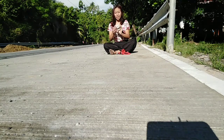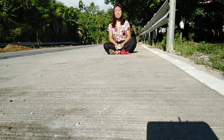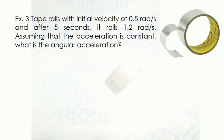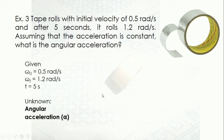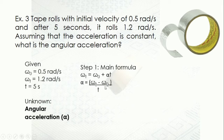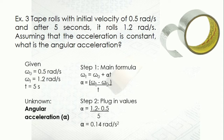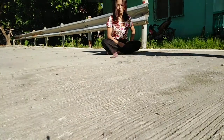While the tape is rolling, rotation also occurs — another example of rotational motion. The tape rolls with an initial velocity of 0.5 rad per second; after 5 seconds it rolls at 1.2 rad per second. Assuming constant acceleration, what is the angular acceleration? Using the motion equation equivalent and plugging in the values, we derive the angular acceleration and find 0.14 rad per second squared.